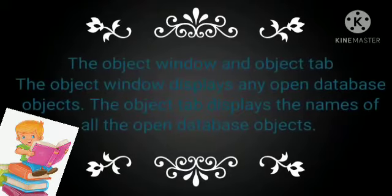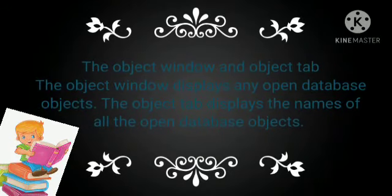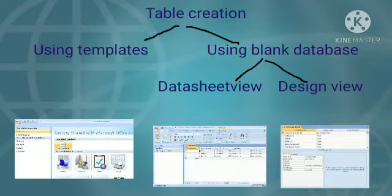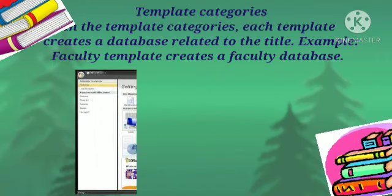The object window displays any open database objects. The object tab displays the names of all open database objects. A table is the fundamental unit of a database — it is the first object to be defined and created. A table can be created in one of the ways shown in the figure under template categories.